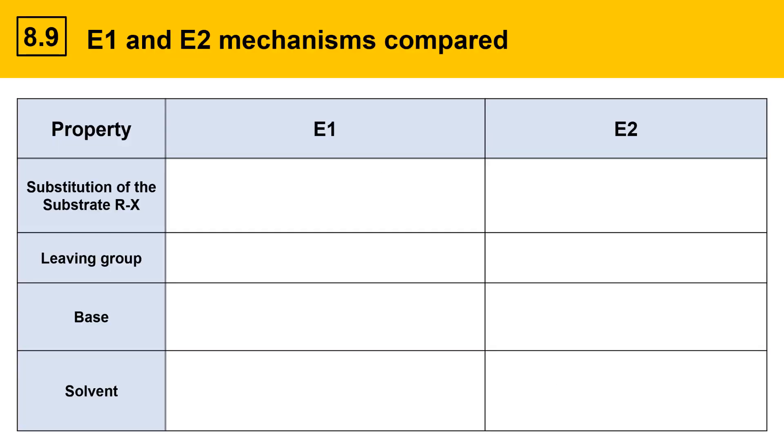This slide summarizes a lot of the important details that classify E1 and E2. Let's take a look first at the substitution of the substrate, RX, the alkyl halide.